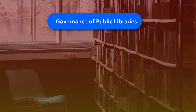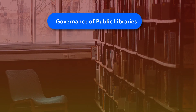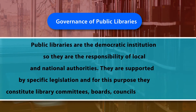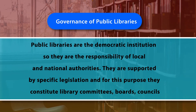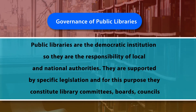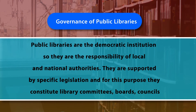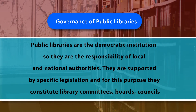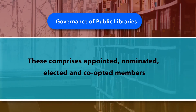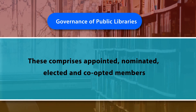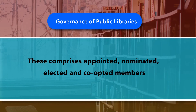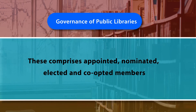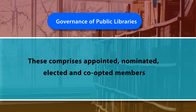Regarding governance of public libraries — how these libraries are controlled and managed: as democratic institutions, they are the responsibility of local and national authorities. They are supported by specific legislation and for this purpose constitute library committees, boards, and councils comprising members who are appointed, nominated, selected, and co-opted according to the provisions of library legislation. These committees, boards, and councils are responsible for the smooth functioning of public libraries.